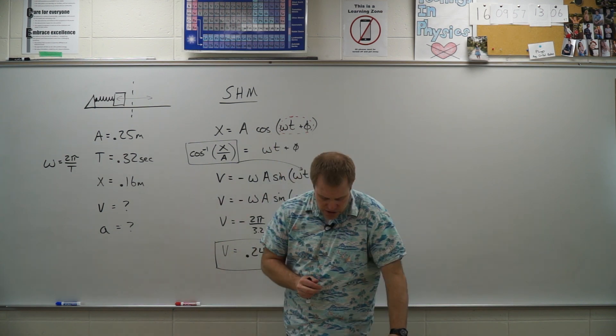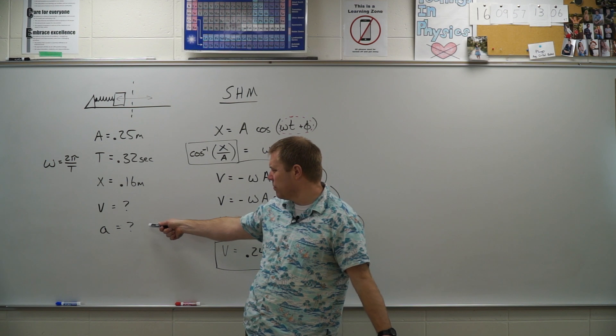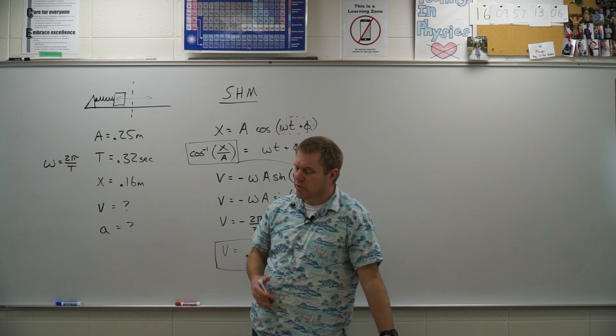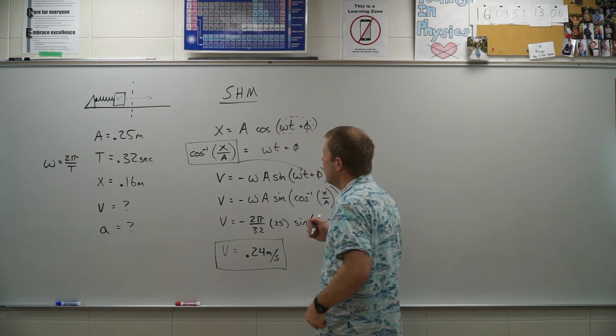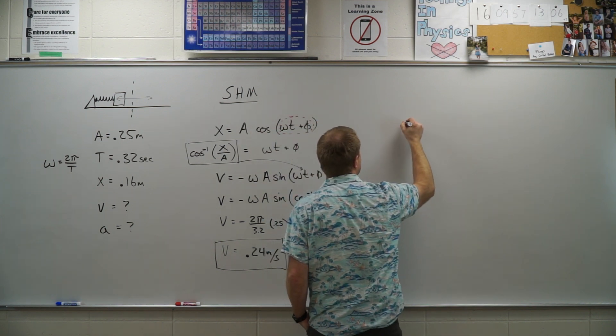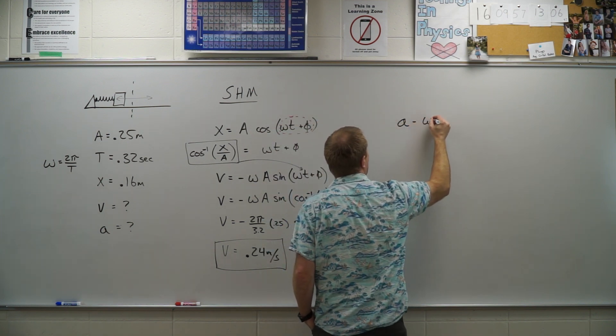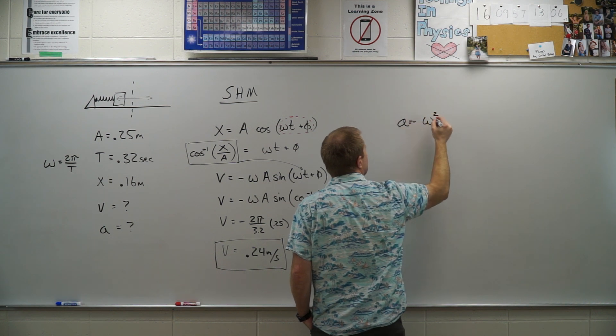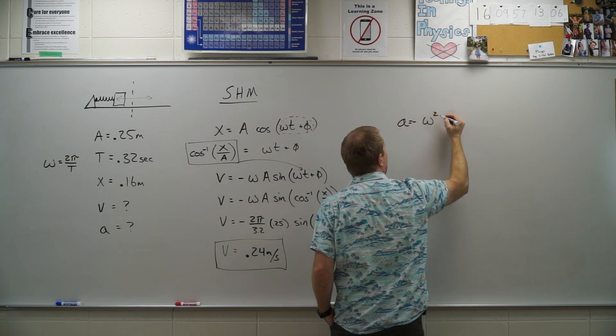Let's go ahead and do part B where we find the acceleration. So acceleration's a little nicer because of the whole basis for simple harmonic motion is that the acceleration is negative omega squared times the original x value.